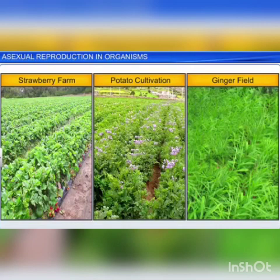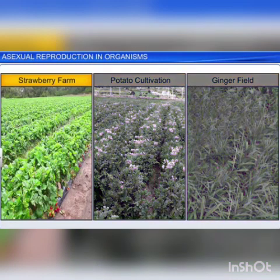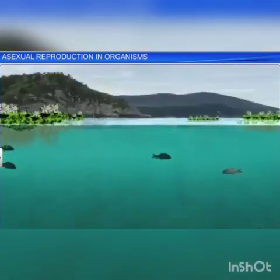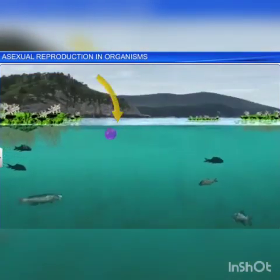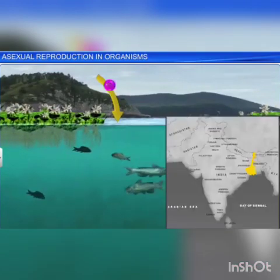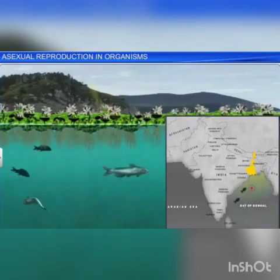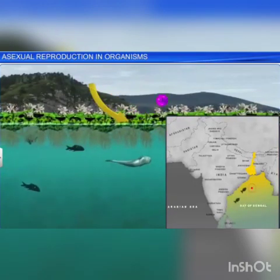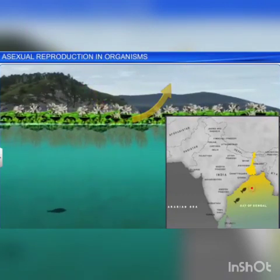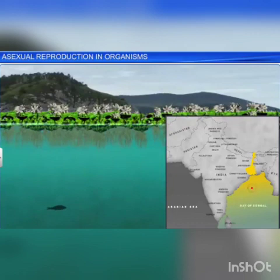Interestingly, farmers and gardeners make full use of vegetative propagation for commercial cultivation of various plants, including strawberry, potatoes, and ginger. Vegetative propagation, however, can turn into a problem in certain cases, like the fishermen of Bengal have discovered. Water hyacinth, an aquatic plant with a phenomenal rate of vegetative propagation, is choking the Bay of Bengal and killing millions of fish, thereby ruining the livelihood of the fishing community.